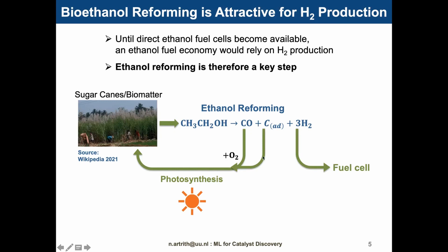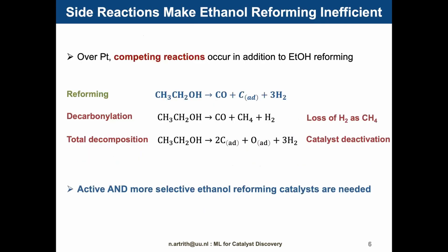It was originally planned for 2020, but was delayed because of COVID-19. The ethanol reforming reactions shown here produce carbon monoxide, carbon, and hydrogen. The hydrogen can directly be used in a hydrogen fuel cell. The carbon monoxide and carbon can be further oxidized to CO2. And CO2 can be absorbed by plants, for example sugarcane, that are used for ethanol production. So overall, this process is in principle carbon neutral.